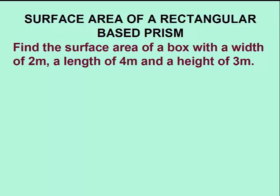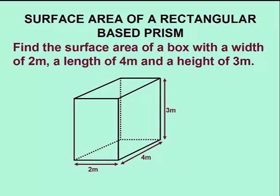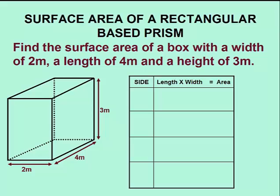We'll begin by finding the surface area of a box, also known as a rectangular base prism, with a width of 2 meters, a length of 4 meters, and a height of 3 meters. To construct this prism, we'll draw two rectangles and then connect the vertices with lines. We'll put in the dimensions and set up a table to calculate the area of all its sides. In this case, all the sides are rectangles, so the area is simply length times width.